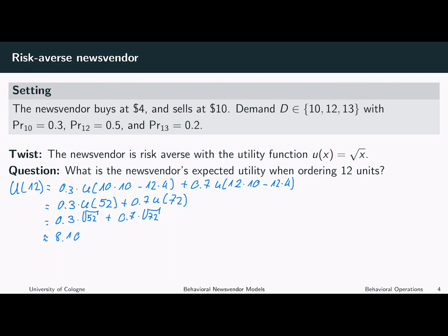Now we could go on to calculate the utilities associated with the other order quantities and then determine the optimal order quantity of this risk-averse newsvendor.